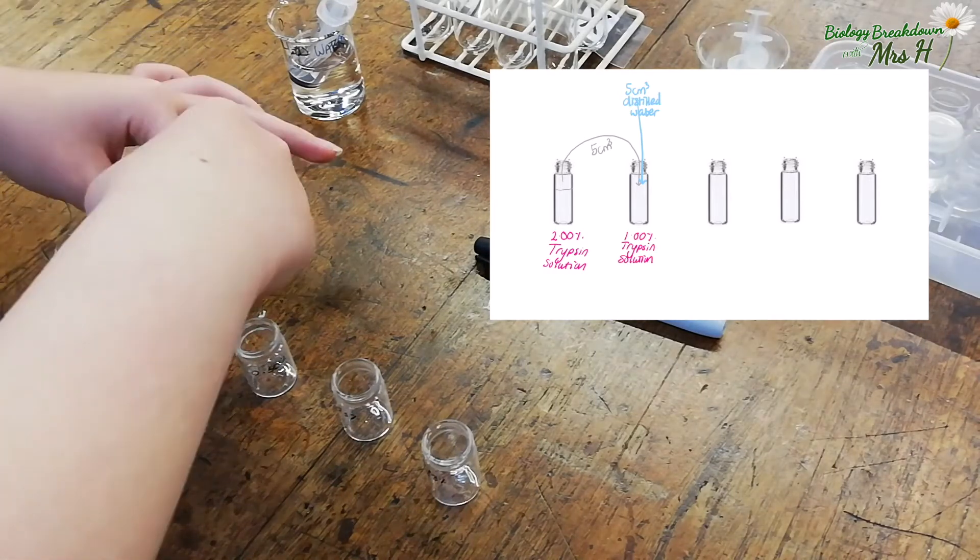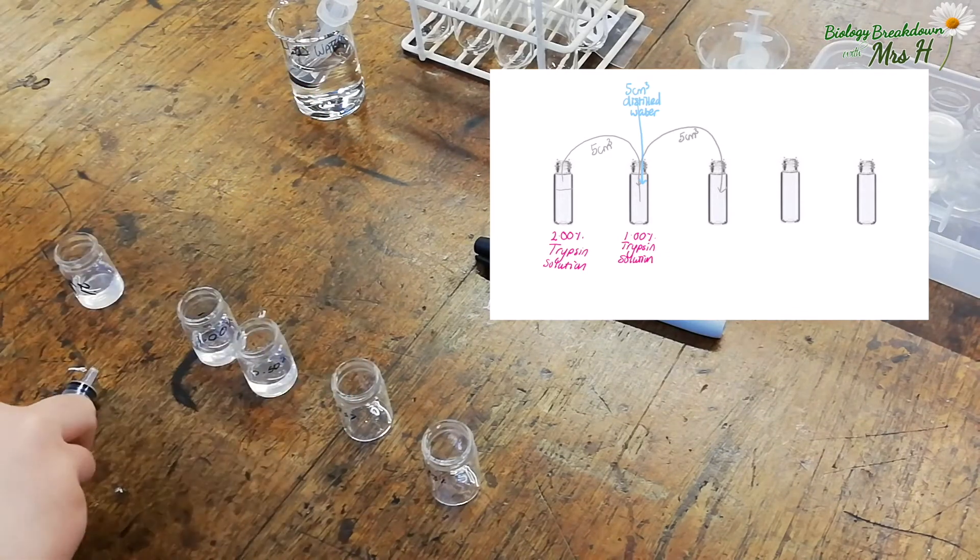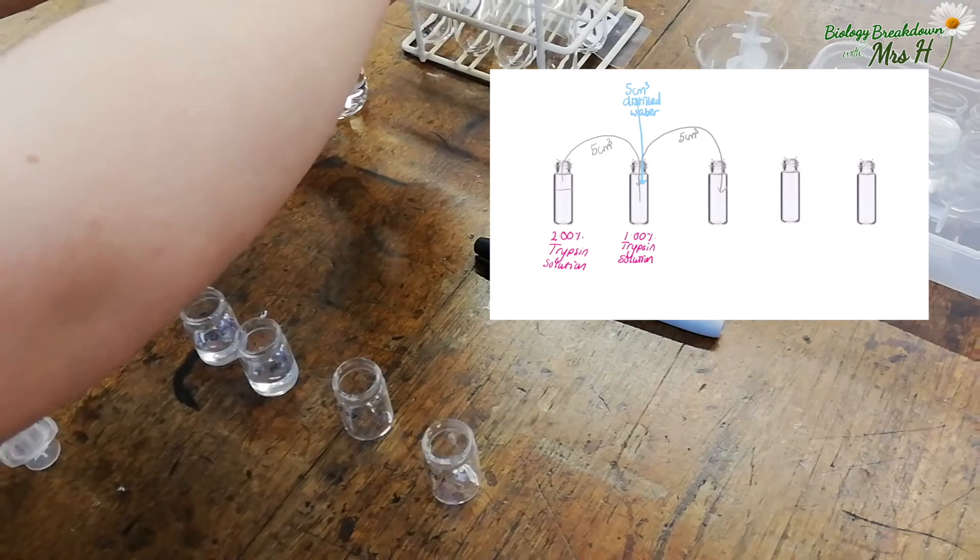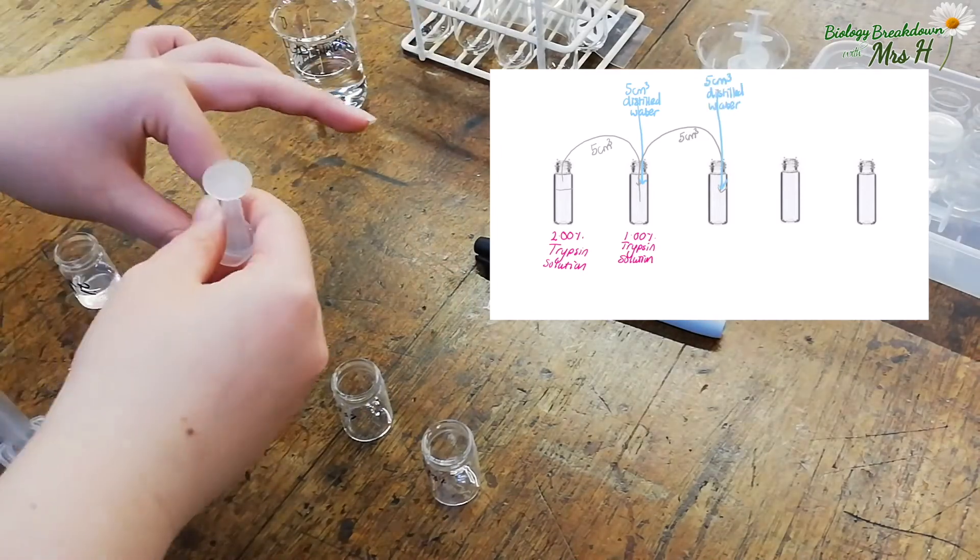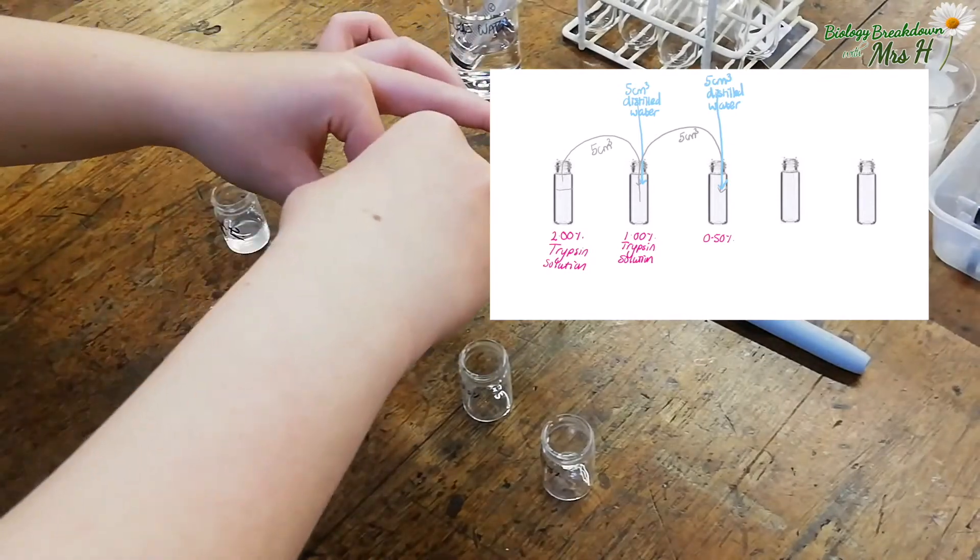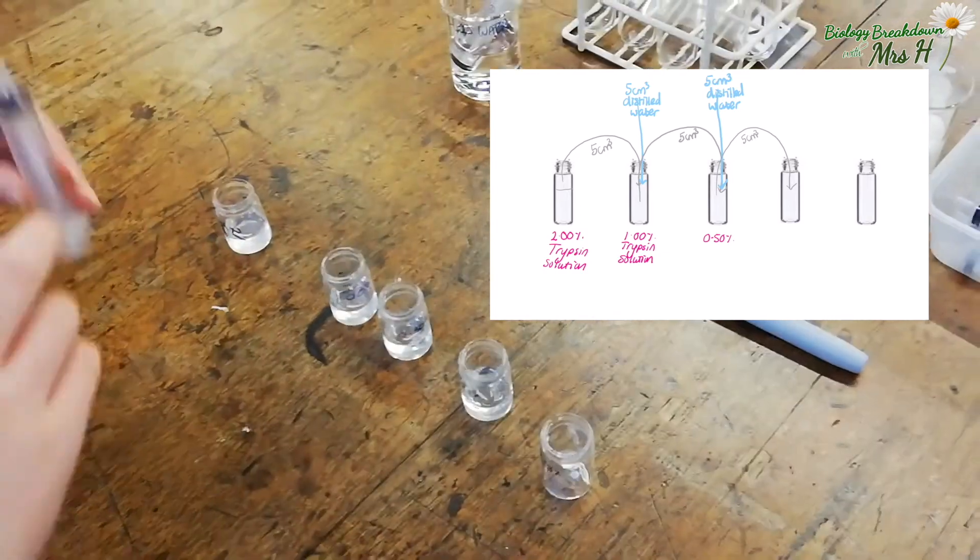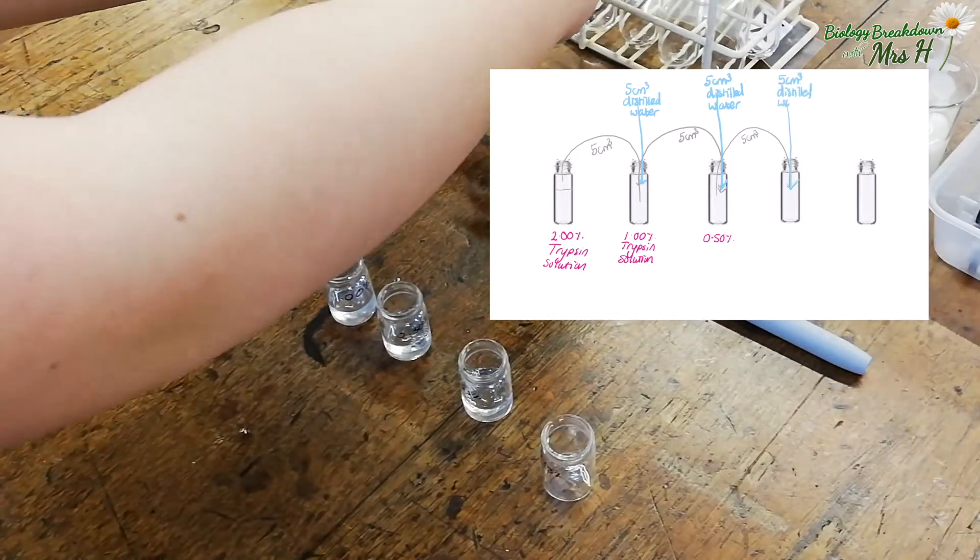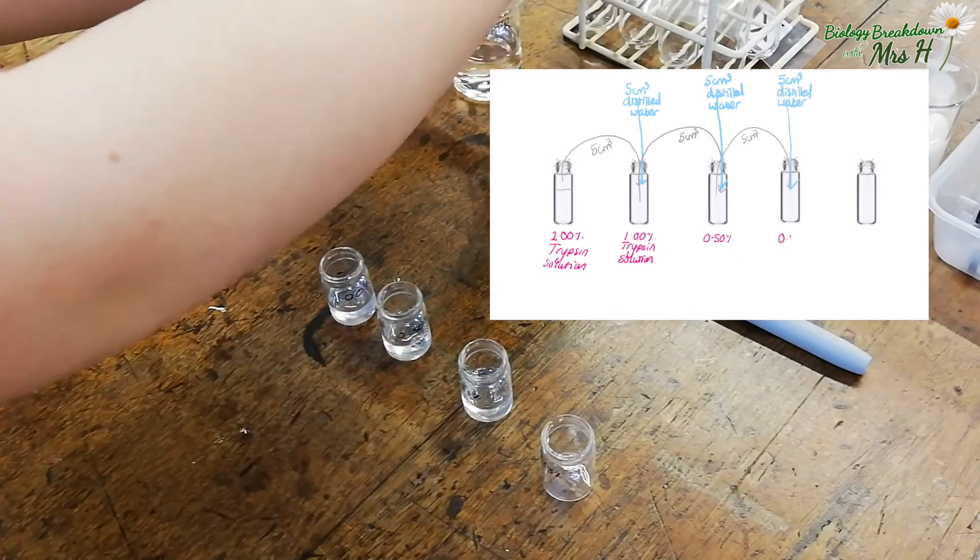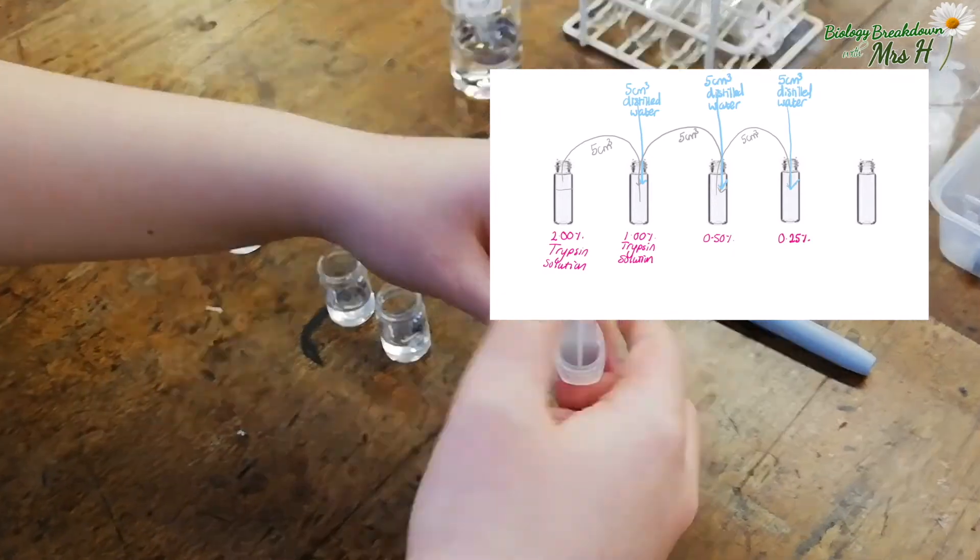Then take 5 cm³ of the 1% trypsin solution and add this to 5 cm³ of distilled water to make your 0.5% solution. Then 5 cm³ of your 0.5% solution and 5 cm³ of distilled water which will give you your 0.25% and then so on and so on.